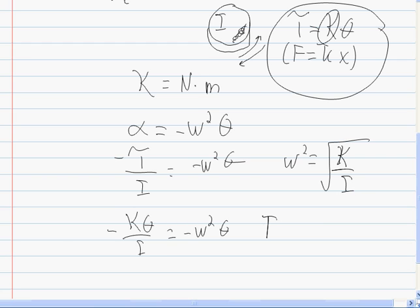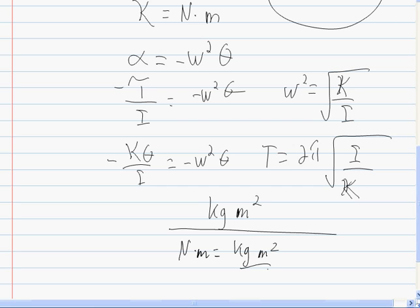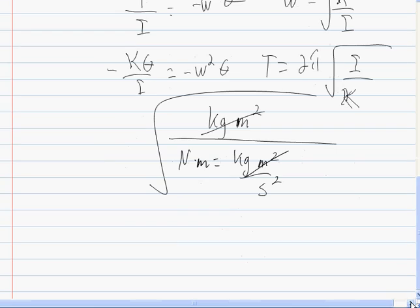And that means that the period is going to be 2 pi, the moment of inertia, divided by kappa. Let's check those units. Just make sure that they turn out the right way. We know that moment of inertia is kilograms meters squared. It's going to be divided by kappa, which is Newton meters. Or kilograms meters squared over seconds squared. Well, those divide away. We end up with 1, the square root of 1 over 1 over seconds squared, which is seconds. We win.